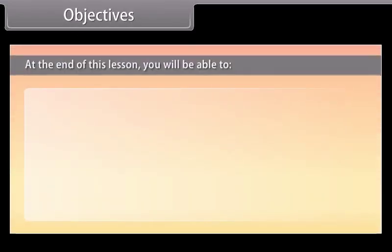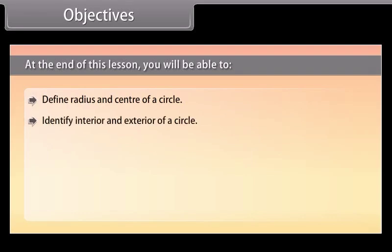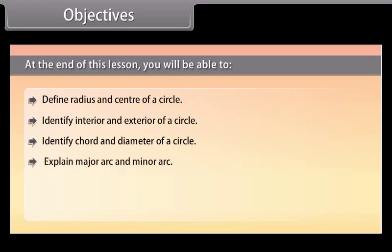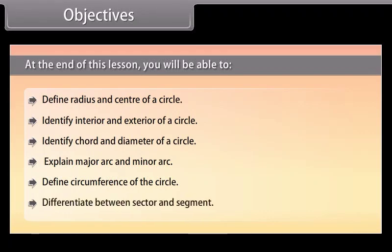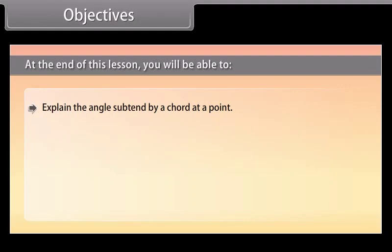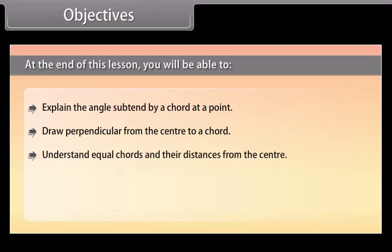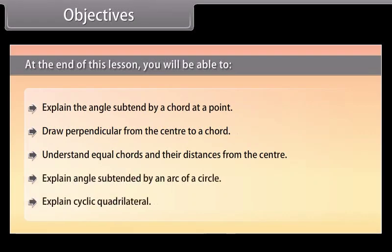Objectives. At the end of this lesson, you will be able to: define radius and center of a circle; identify interior and exterior of a circle; identify chord and diameter of a circle; explain major arc and minor arc; define circumference of the circle; differentiate between sector and segment; explain the angle subtended by a chord at a point; draw perpendicular from the center to a chord; understand equal chords and their distances from the center; explain angle subtended by an arc of a circle; and explain cyclic quadrilateral.